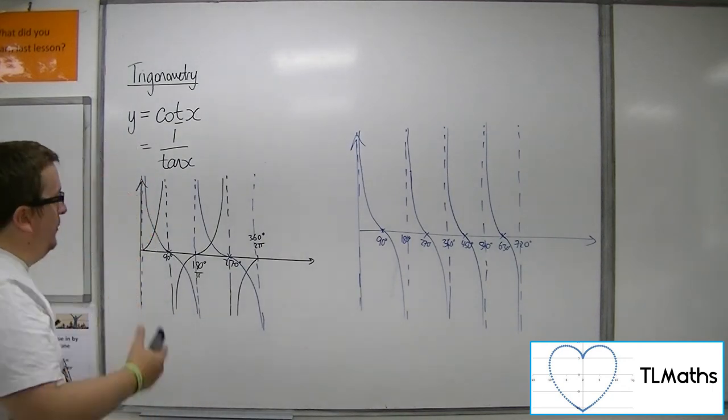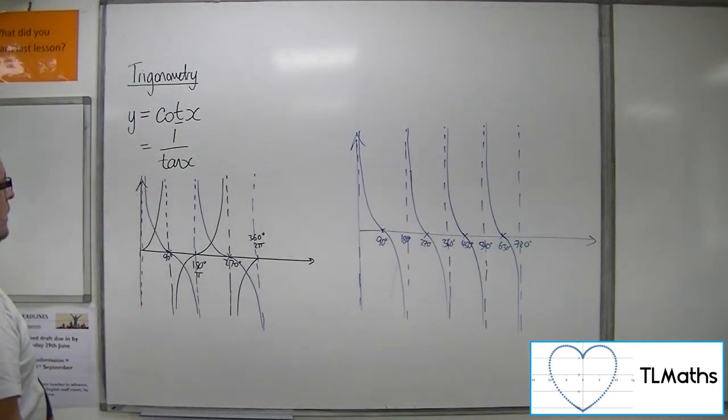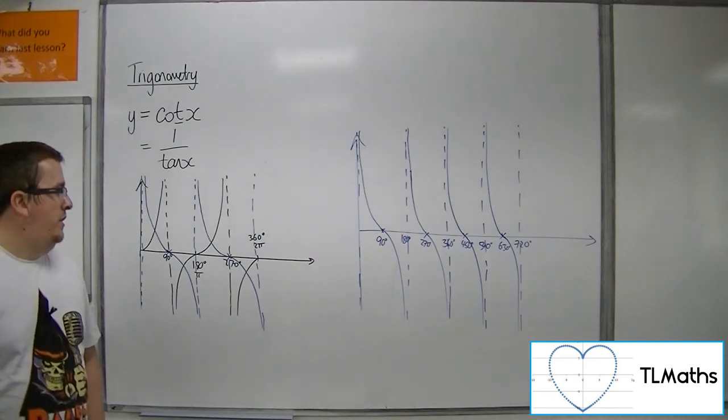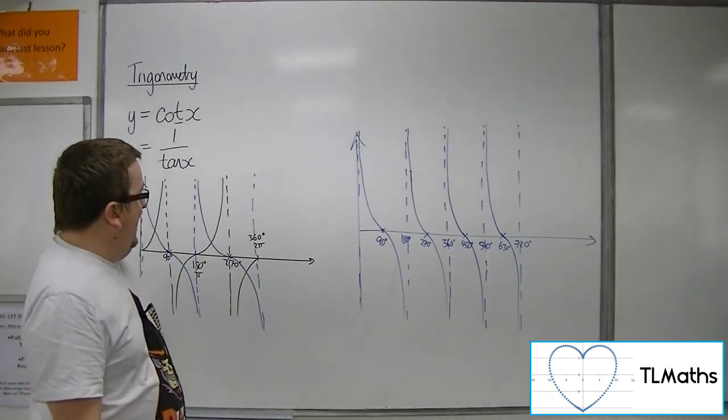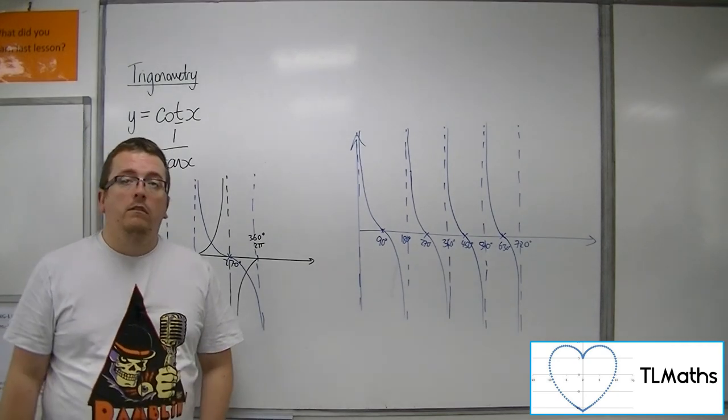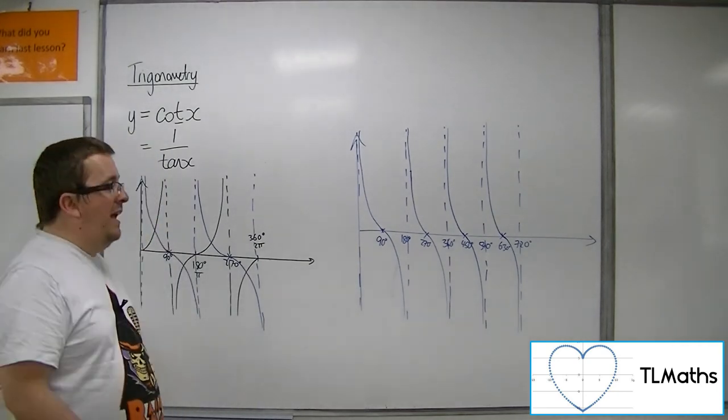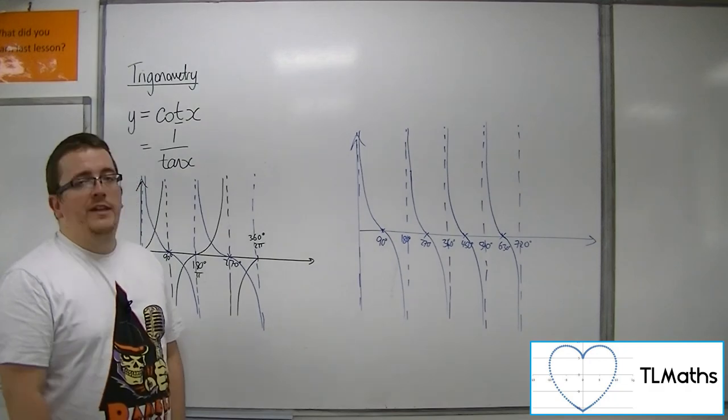So cot looks like tan. It looks like a reflection of tan and a translation as well combined. And that's how we can draw the cotangent function.